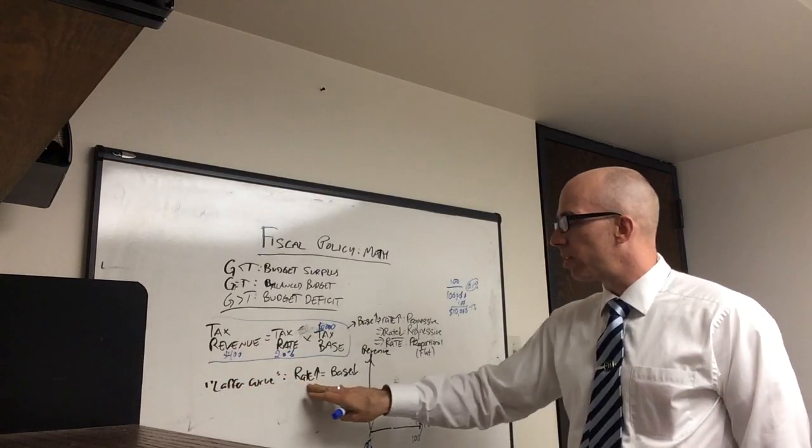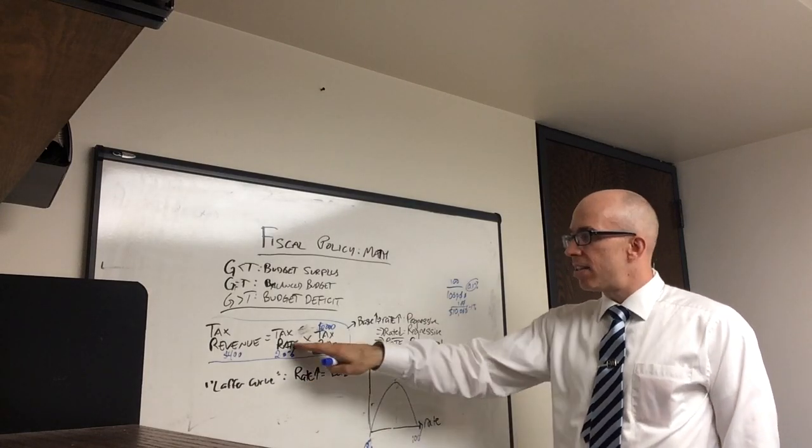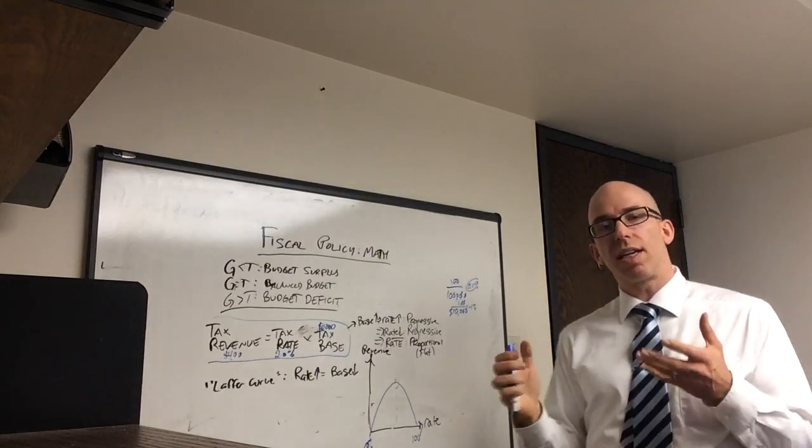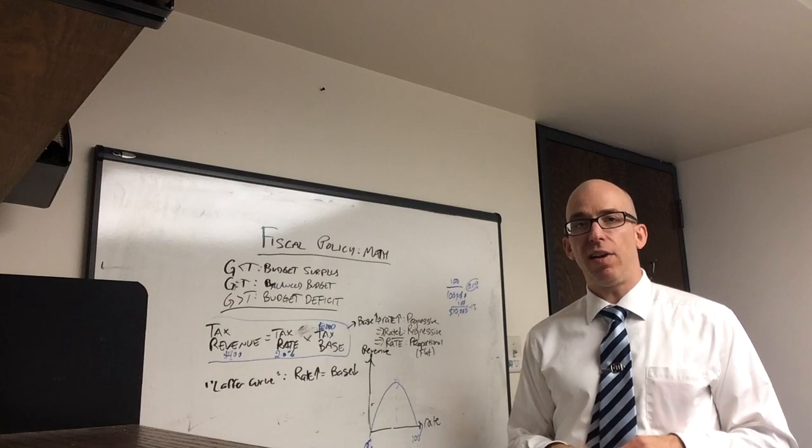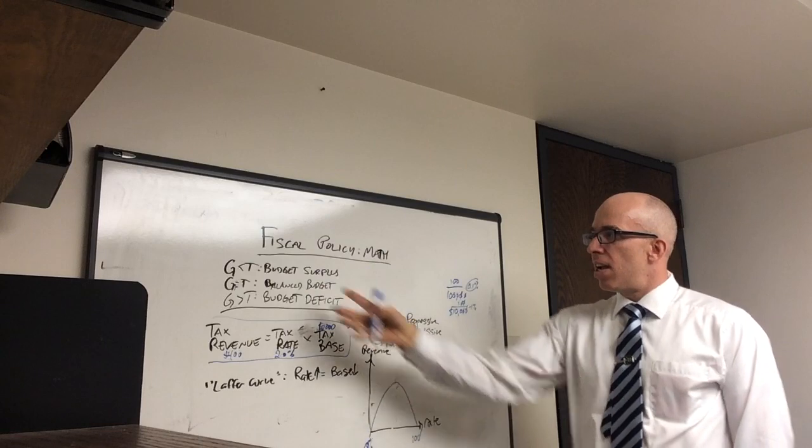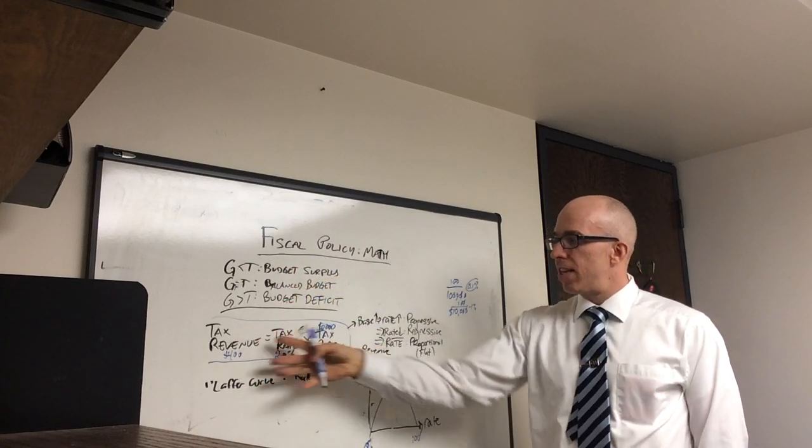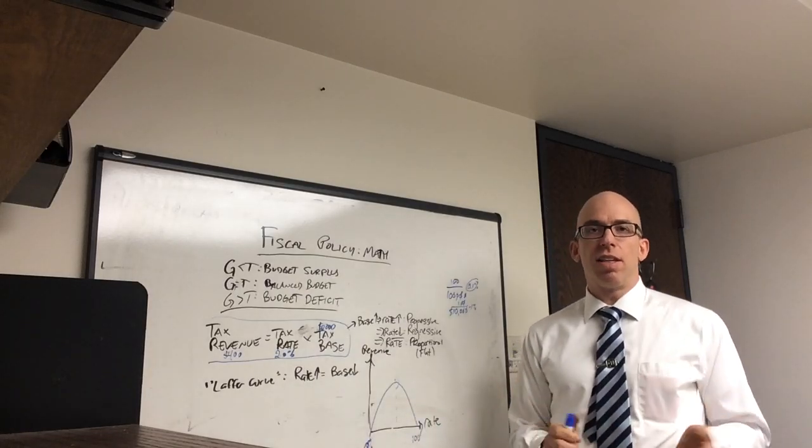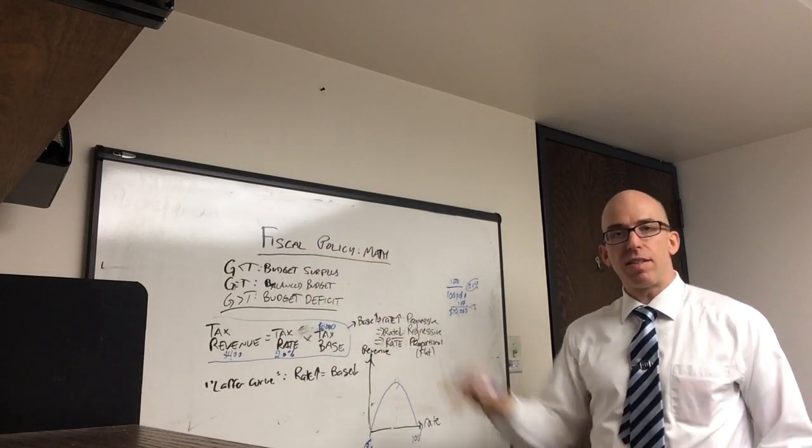So this is a relationship where the rate actually causes the base, where this is the cause and the base is the effect. This is the opposite. This is where the base causes the rate. So policymakers will look at different items and actually charge higher percentages on higher incomes. So those are the three types of math in the fiscal policy that usually I look at. The surplus, balanced budget, and deficit. I look at this formula for tax revenue. And then finally, I discuss the Laffer curve. And I talk about it as more controversial, but still important to learn. So those are the three issues that you might see further in macro.